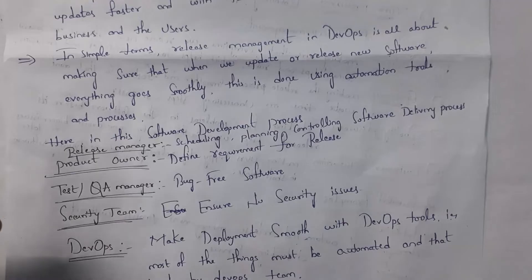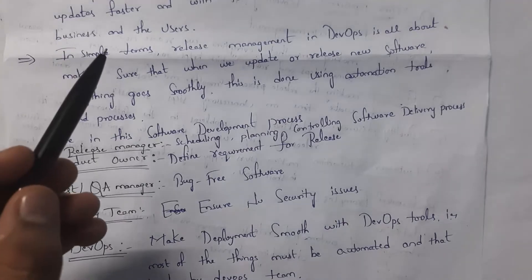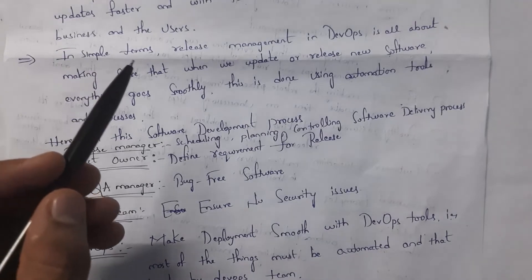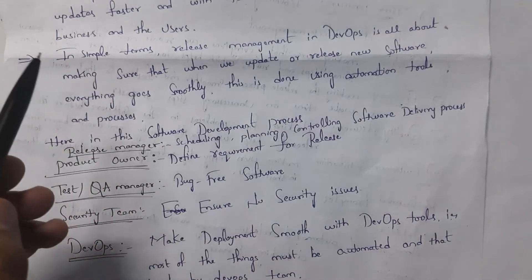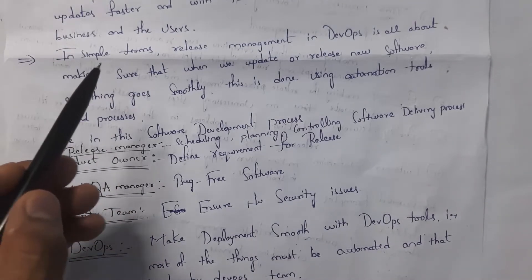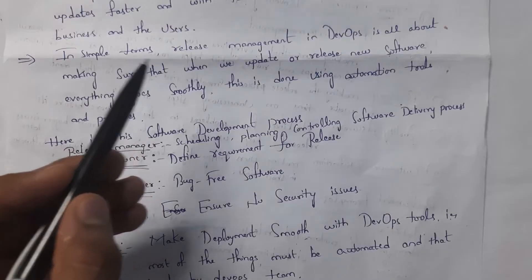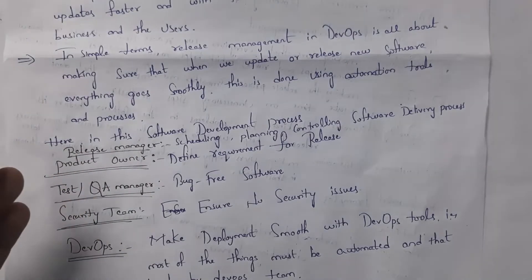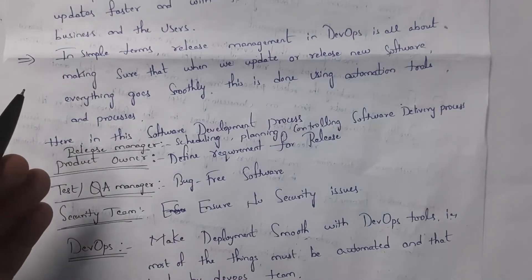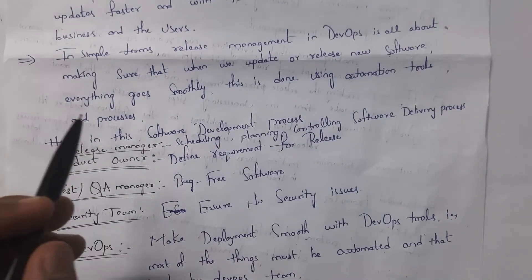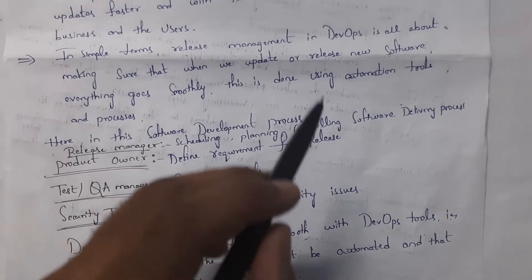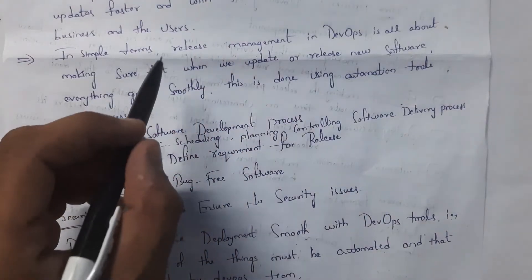In simple terms, release management in DevOps is all about making sure that when we release or update any new software, everything goes smoothly, and this entire work is done using automation tools and processes.